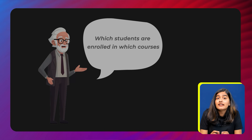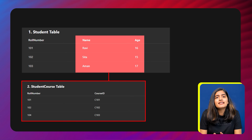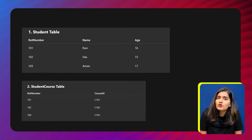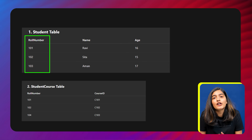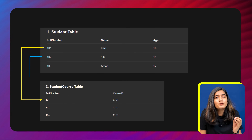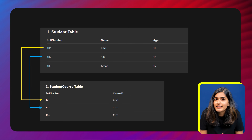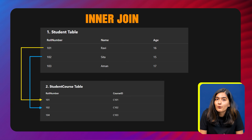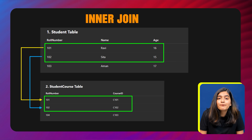The principal wants to find out which students are enrolled in which courses, but there's a problem: the student course list doesn't tell us names and ages — just roll numbers and courses — and the student list doesn't tell us what courses students are taking. So we match the two lists using the roll number, because that's the common piece of information in both. By connecting the roll numbers, we can see student name, age, and course all in one place. This matching is exactly how inner join works — it brings together only the students who appear in both lists.